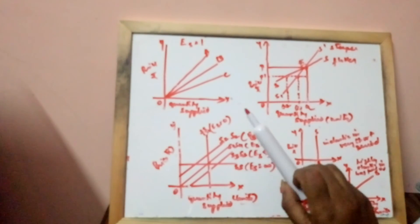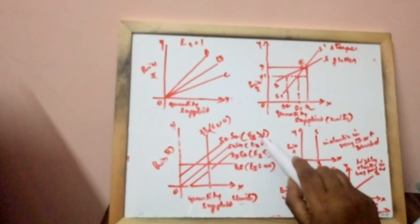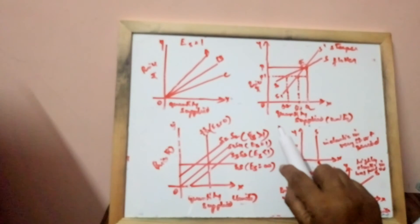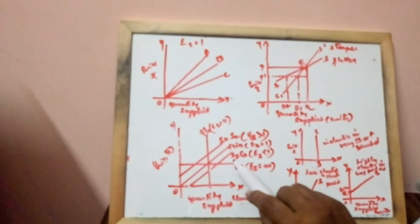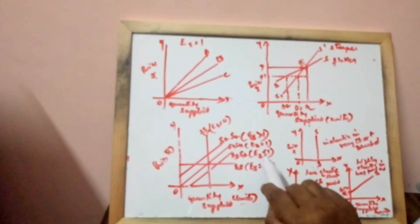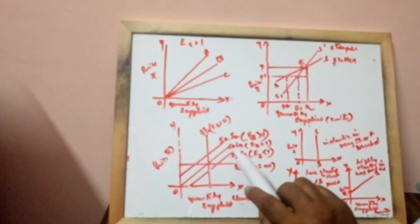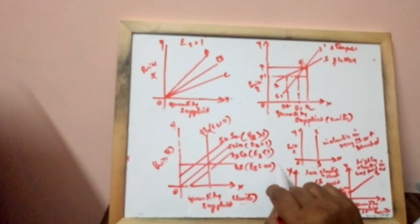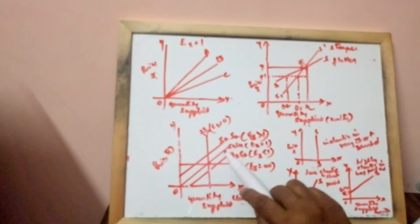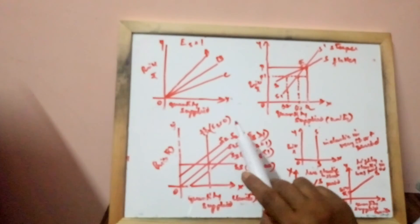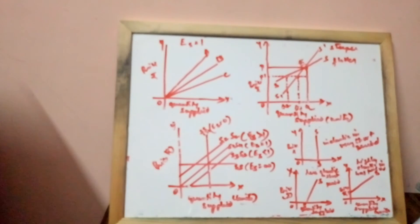Next, S2S2: elasticity of supply is less than 1, meaning the percentage change in supply is less than the percentage change in price. Then S3S3: elasticity of supply is greater than 1, meaning more elastic — percentage change in supply is greater than percentage change in price. Next, S4S4: elasticity of supply equals 1, which is unitary elastic — percentage change in supply equals percentage change in price. These are the observations in elasticities of supply.